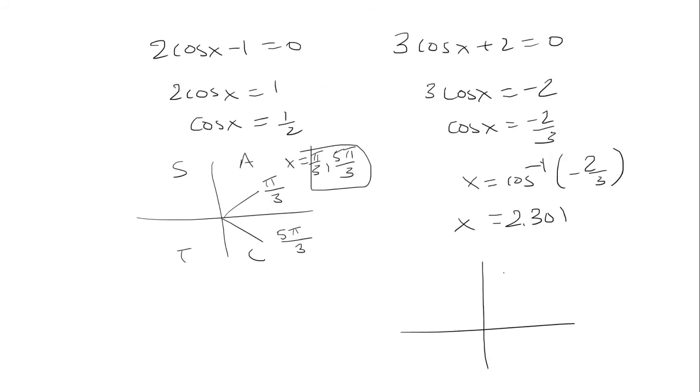Now, all students take calculus. Cosine is negative. So that's got to be in the second and the third quadrant. The calculator gave us 2.301, which is not quite pi, because pi is 3.14.